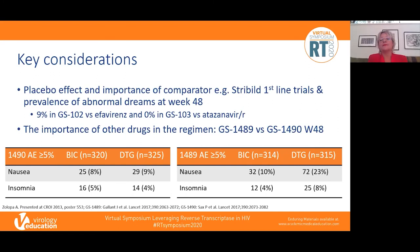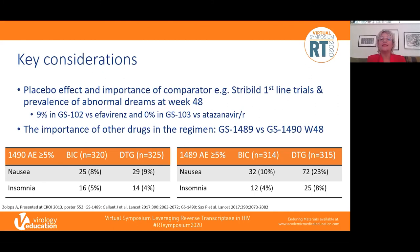The weight issue also warrants attention. Key considerations include the importance of placebo and comparator: in the STRIDE/BIC first-line studies, the prevalence of abnormal dreams at week 48 in Gilead study 102 was 9% compared to 0% in study 103 where atazanavir/ritonavir was the comparator — illustrating placebo/comparator impact. The composition of the regimen also matters: in Gilead studies 1489 and 1490, differences in nausea and insomnia rates between bictegravir and dolutegravir arms largely reflect the backbone rather than the integrase.